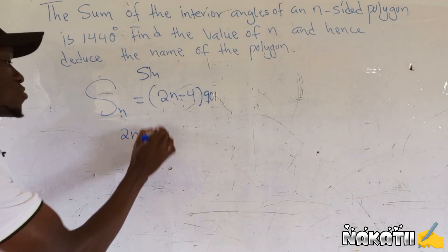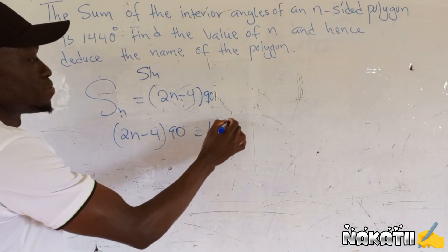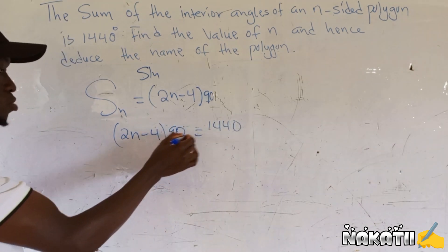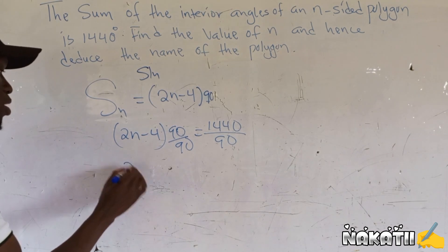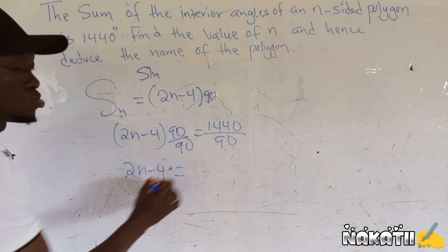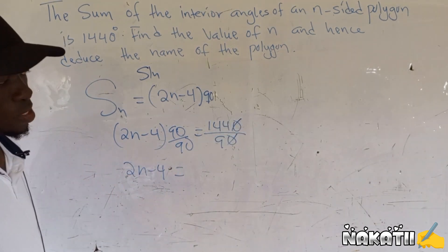So to get n we divide first of all both sides by 90. You're going to have 2n minus 4 equals to when we simplify this one, this will give us 16.